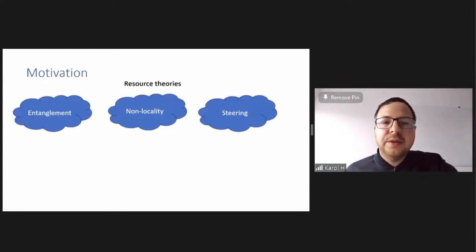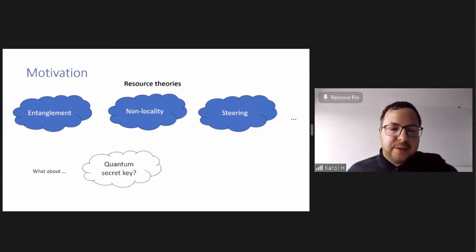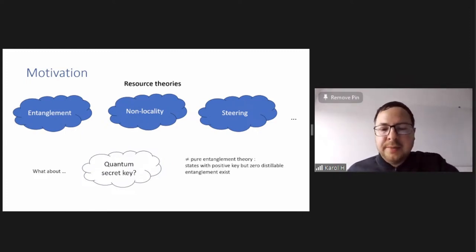So regarding motivation, we know a bunch of research theories, like the prominent ones are entanglement, non-locality, steering, and many, many others. And the question is, what about quantum secret key? Can we also develop this fully as a resource theory? And one could ask, oh, maybe this is late entanglement theory because of the short-play scale proof of security of BB84. It's reduced to entanglement distillation. But the answer is no. It will be a different theory because pure entanglement is, in general, different than secure key. There are states that have positive key but zero distillable entanglement.